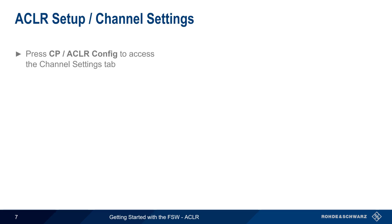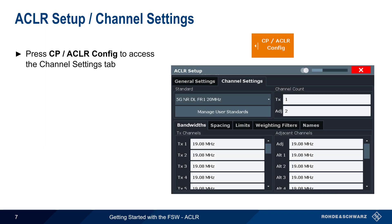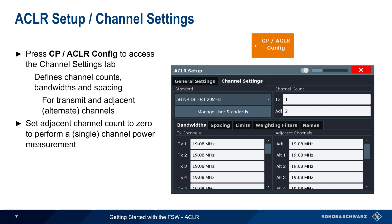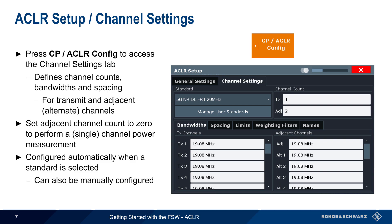The Channel Power ACLR Config button is used to access the channel settings, which in turn are used to define the channel counts, bandwidth and spacing for both the transmit channel as well as the adjacent or alternate channels. Setting the adjacent channel count to 0 can be used to perform a single channel power measurement. Channel counts, bandwidth and spacing are configured automatically when a predefined standard is selected, but these can also be manually configured.